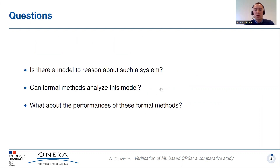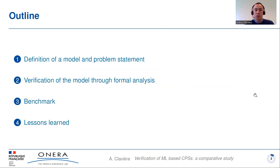This leads us to three questions: Can we build a model for such a system? Can formal methods analyze this model? And what about the performances of these formal methods? To answer these questions, here are our contributions. First, we define a model to formalize the problem of ensuring the safety of the system of interest. Then we review the available formal methods for analyzing this model. We compare these formal methods against a benchmark with representative use cases, and we present the lessons learned from this experiment.